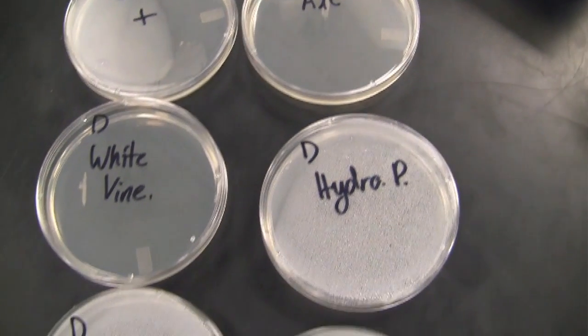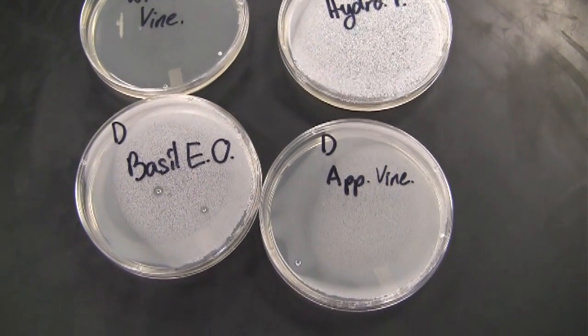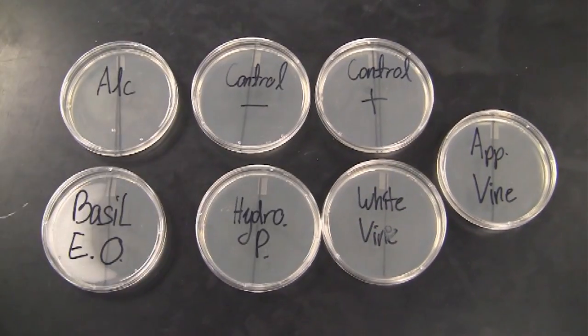Here are the petri dishes after I spread them. They are labeled D on the top left to represent a filter disc. These petri dishes have a line and a dot down the back.